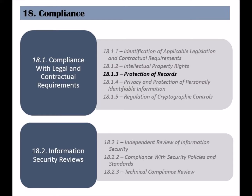The third control of the compliance with legal and contractual requirements category is called protection of records. All organizations maintain different kinds of records, based on their business, departments, types of activities, and size. The organization has an obligation to protect and secure those records, based on legal and regulatory requirements.